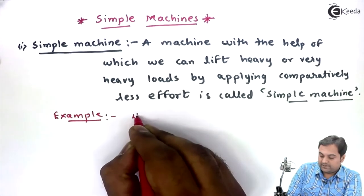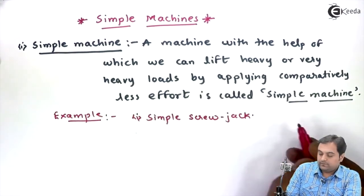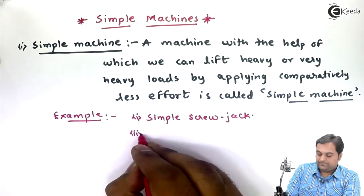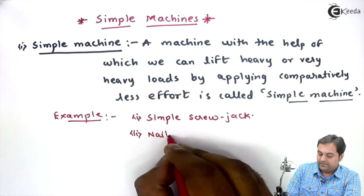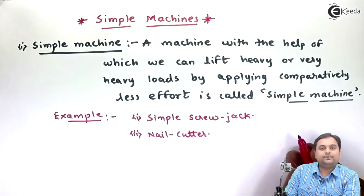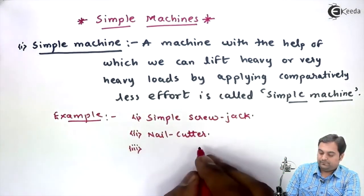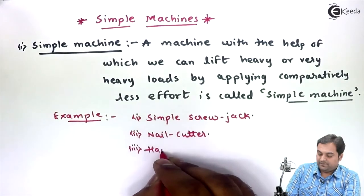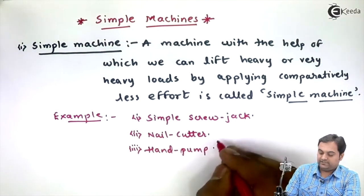Other examples are nail cutter - it is also an example of a simple machine where we are applying less effort. Next, hand pump - it is also an example of a simple machine. So like this we have n number of examples where we apply less effort and lift heavy loads.